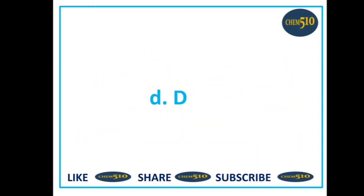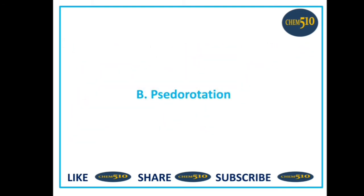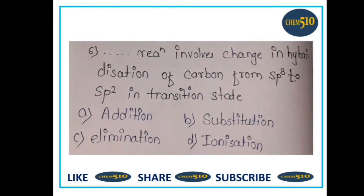Question five: the movement of ring carbon atoms up and down at right angles to the average plane of the ring so as to cause puckering is known as: a) rotation, b) pseudo rotation, c) angle strain, or d) I-strain. The answer is pseudo rotation, so option B is correct.